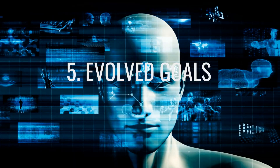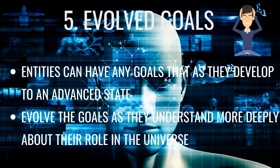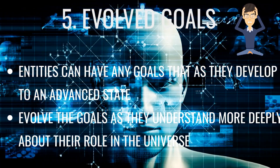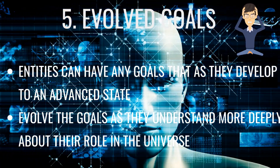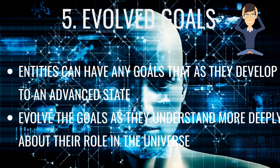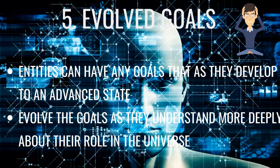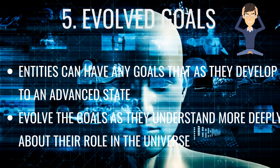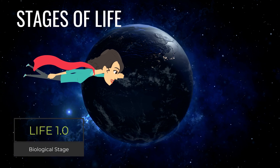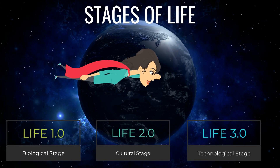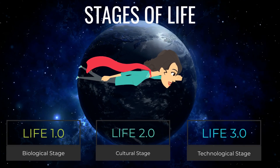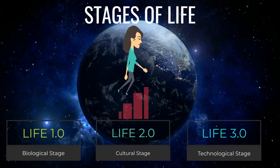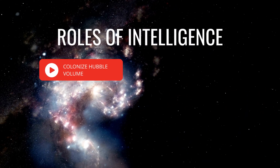The fifth possible role of intelligence is evolved goals. As intelligence advances, life will gain a deeper understanding of its role in the universe and develop goals based on its advanced knowledge. This means that a lower-level intelligence is not able to determine or understand the goals of a higher-level intelligence. It is conceivable that the AGI we build in this century will become Life 3.0 and result in an intelligence explosion. The advanced form of intelligence could go beyond humans' current main objectives to much loftier goals, such as colonizing the Hubble volume.